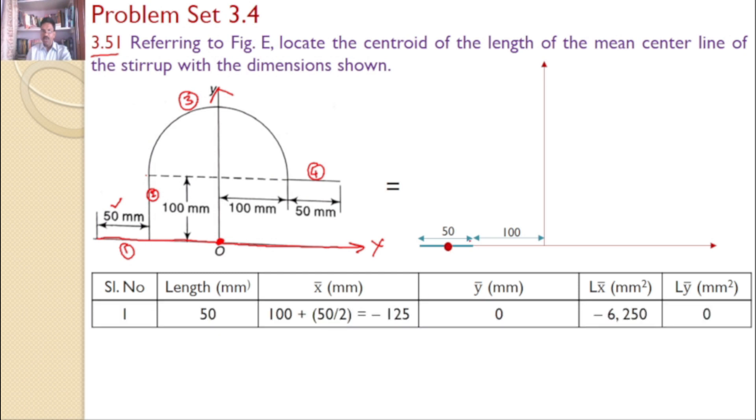Clearly, we can see that y-bar is 0 because this is lying on the x-axis. And x-bar, we need to measure from this point: 100 plus 50 by 2, which is 125. But we are measuring towards the left side, which is the negative direction of the x-axis.